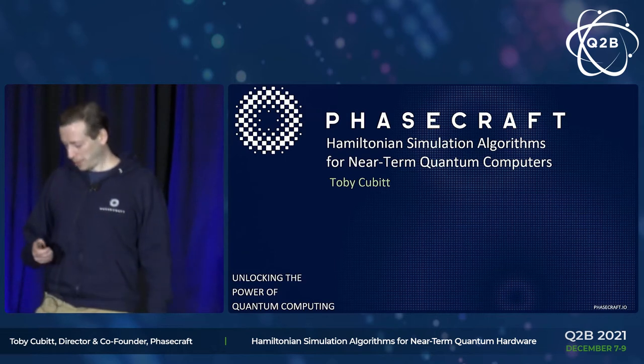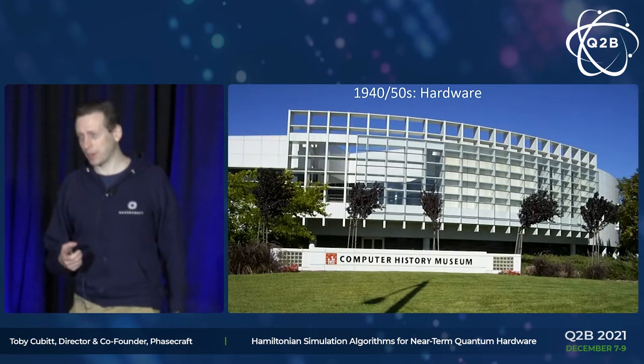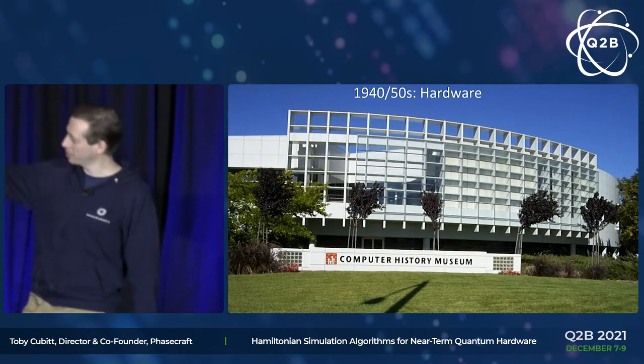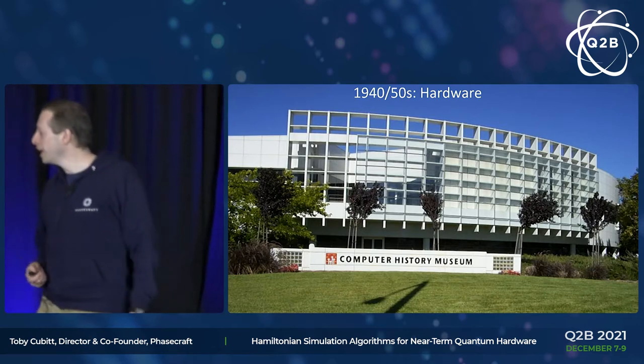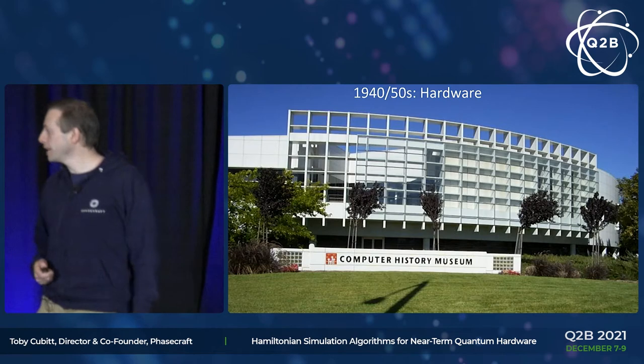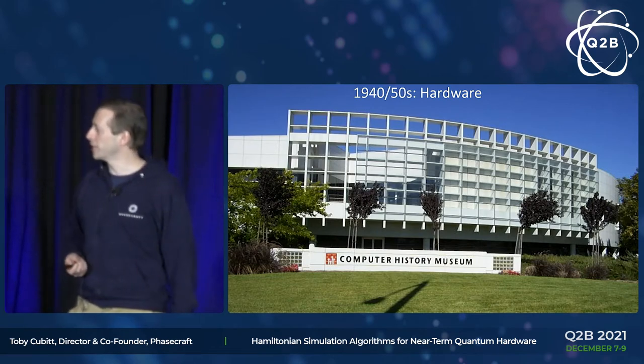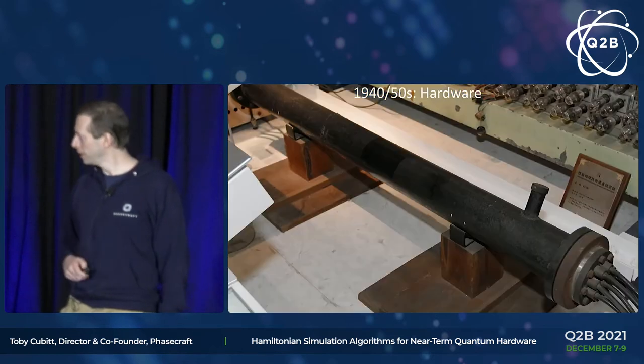One of my favorite things to do when I'm back in this corner of the world is to go to the Computer History Museum, which is just up the road. If you haven't had a chance to go there, I strongly recommend it. It's really interesting to go back and look at the history of classical computation back in the 1940s, 50s and 60s and remember where we've come from.